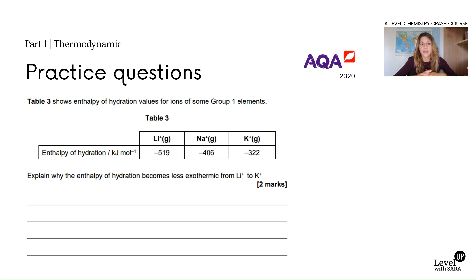Again, same concept. Think about what can you compare, volume or charge, and then what type of attraction are you talking about. With hydration it's always the attraction between the ions and the dipoles of water. Why does it become less exothermic from lithium to cesium? What changes as you go down the group? The volume. Greater radius means lower charge density means weaker attraction, so less exothermic.